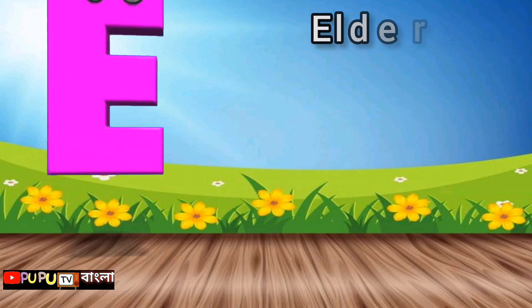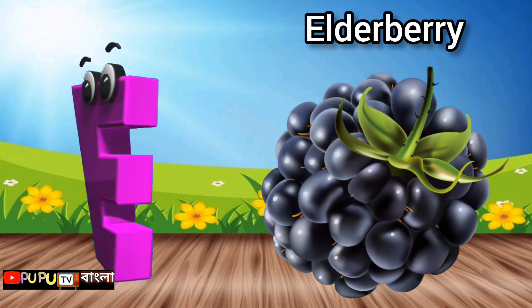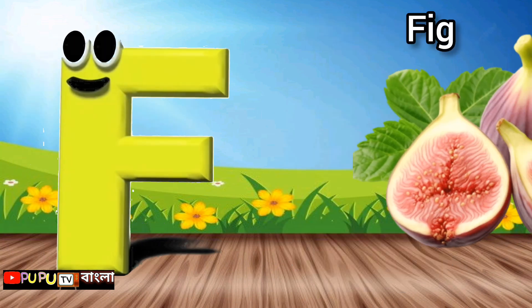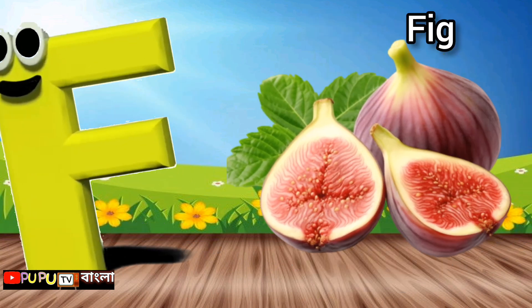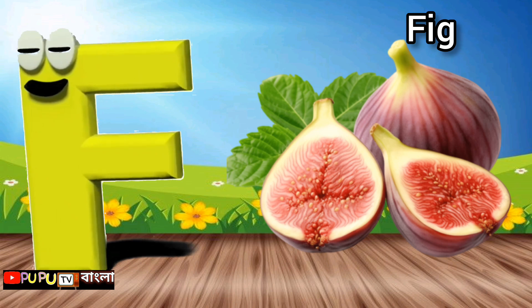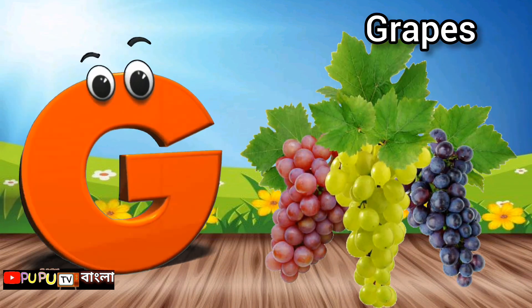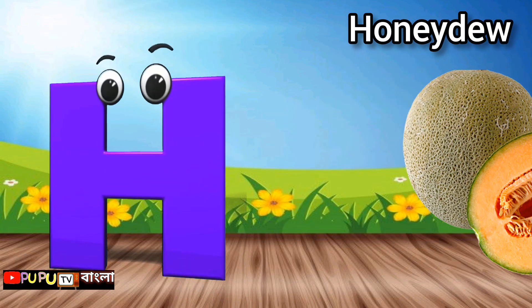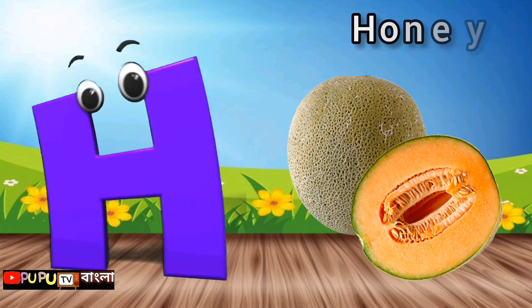E is for Elderberry, E-E-Elderberry. F is for Fig, F-F-Fig. G is for Grapes, G-G-Grapes. H is for Honeydew, H-H-H-H-Honeydew.